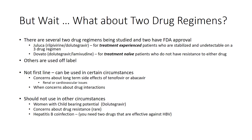Looking at the preferred guidelines table, you may notice a couple of two-drug regimens. There are a few FDA-approved ones: rilpivirine plus dolutegravir for treatment-experienced patients stabilized and undetectable on a three-drug regimen, and dolutegravir plus lamivudine for treatment-naive patients with no resistance to either drug. Other two-drug combinations, such as protease inhibitors with lamivudine or emtricitabine, are used off-label and are definitely not first-line, but can be used in certain circumstances.